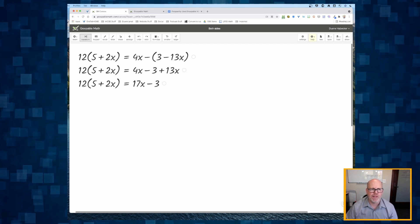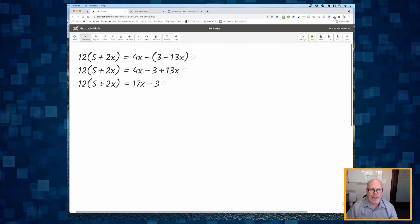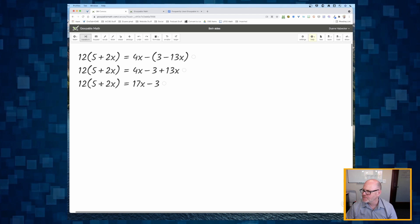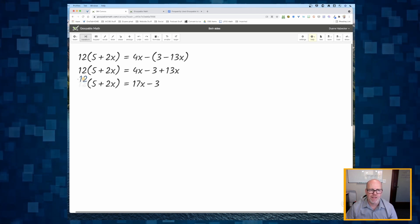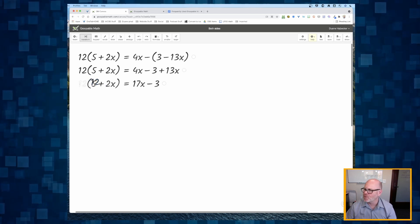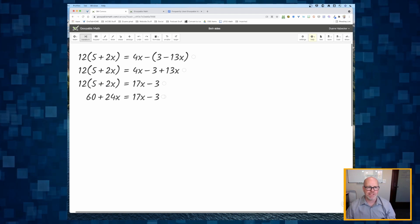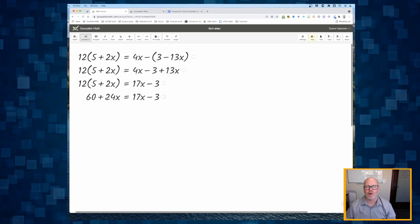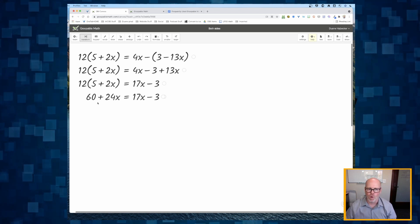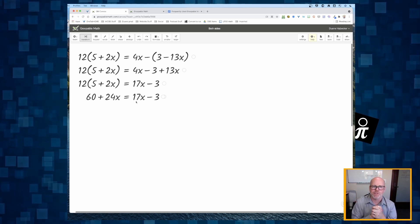And then similarly on the left side, I know I can't add the 5 plus 2x, but if I click and hold on that 12 and drag it into the parentheses, it's going to distribute that 12 across the parentheses, giving me 60 plus 24x. So now I've got this wonderful equation with variables on both sides.